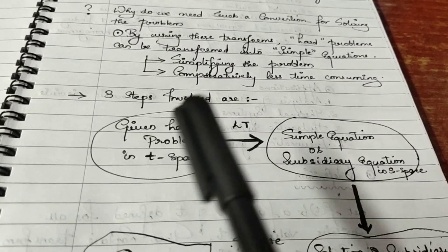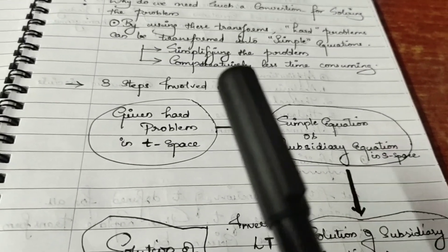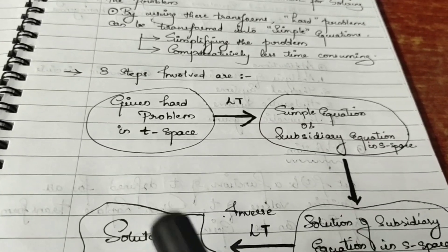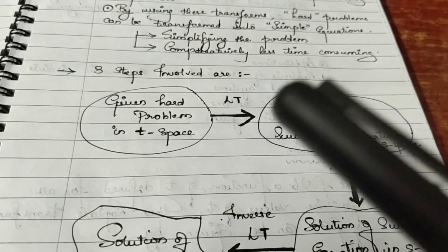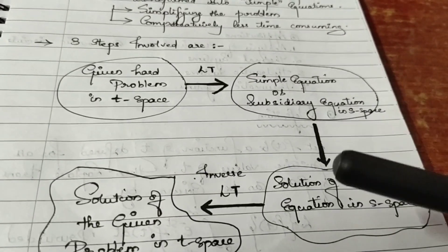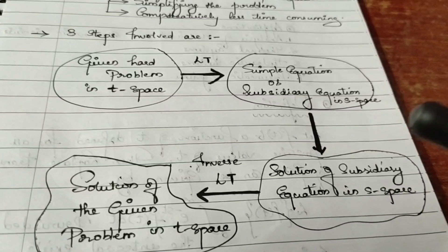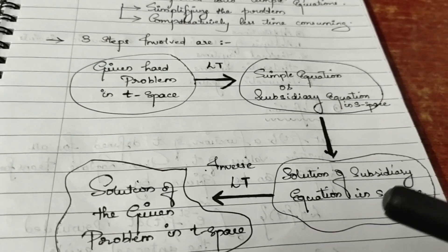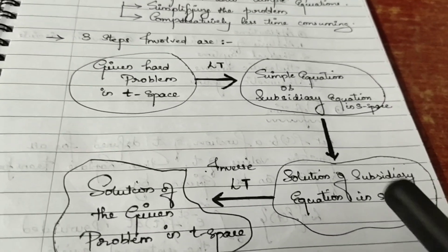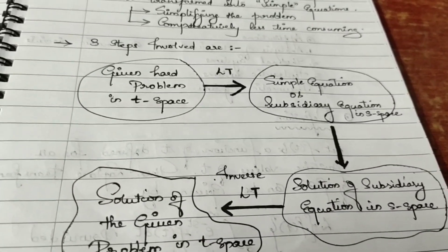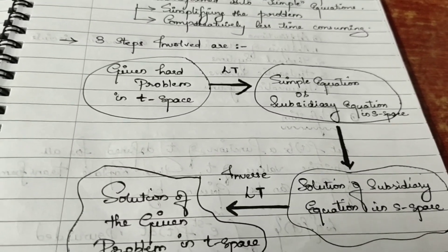There are three steps involved in solving problems using Laplace transforms. The first step is to convert the given hard problem or differential equation in T space into a simple subsidiary equation in S space by taking the Laplace transform. The second step is to solve the subsidiary equation in S space by algebraic manipulations to get the solution in S space. Since we want the solution in T space, the third step is to back-transform using the inverse Laplace transform.